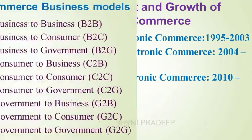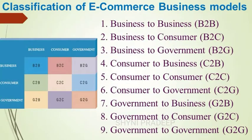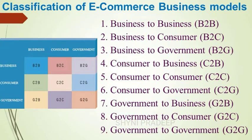The next topic is the classification of e-commerce business models. Business organizations, consumers, and government are the major parties in e-commerce. Sometimes employees, which means informal workers, also participate. E-commerce has been classified into many categories: business to business, business to consumer, business to government, consumer to business, consumer to consumer, consumer to government, government to business, government to consumer, and government to government.